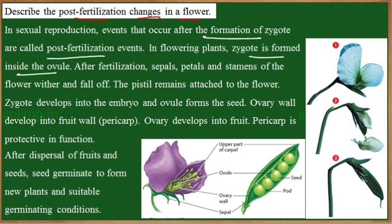Let us quickly recall the structure of the flower. Here is a pea flower. These are the outer whorls — that is, the sepals and petals — and the androecium, which is the stamen unit. It has the anther and the filament. This structure over here is the gynoecium, which includes the carpel. The carpel includes the stigma, style, and ovary. These green structures over here are the ovules.